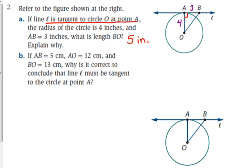Let's look at this from a different perspective. Same figure, but we're not going to use what we just established in part A. We're starting totally from scratch. Part B. If AB is 5 centimeters, AO is 12 centimeters, and BO is 13 centimeters, why is it correct to conclude that line L must be tangent to the circle at point A? So we don't know that it's tangent, but we're trying to prove that it's tangent.